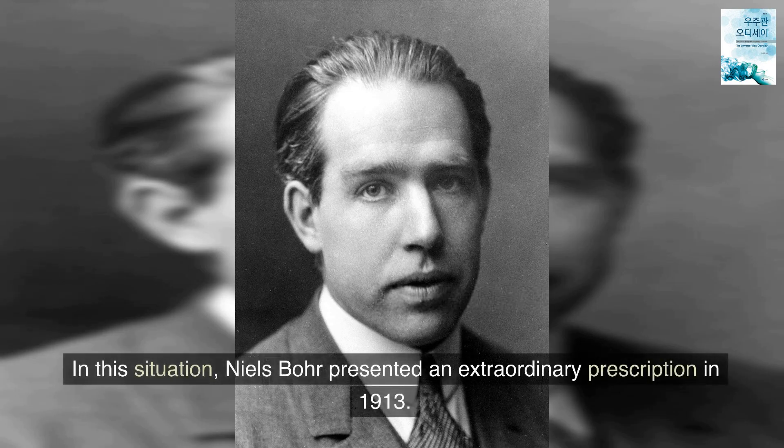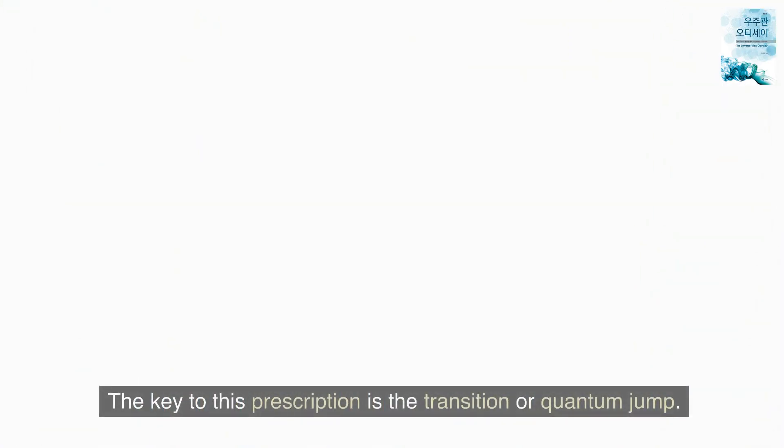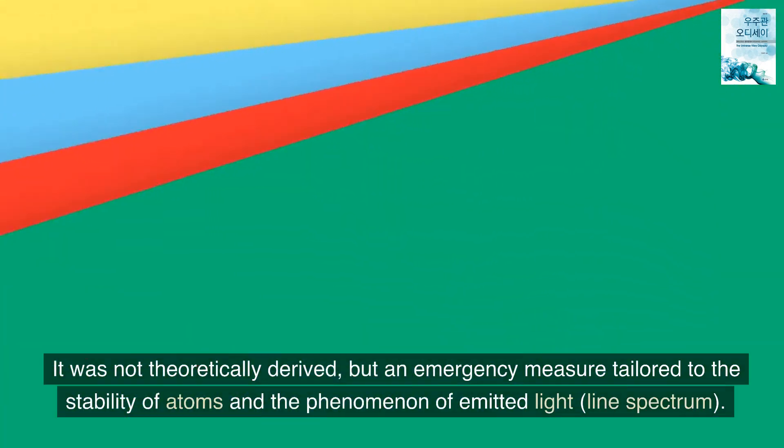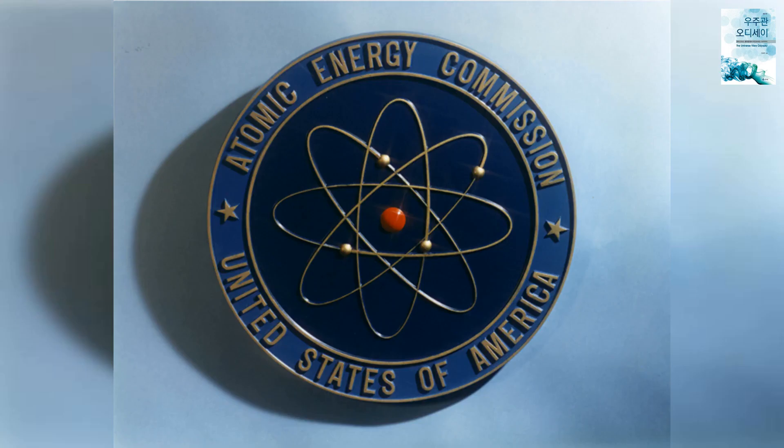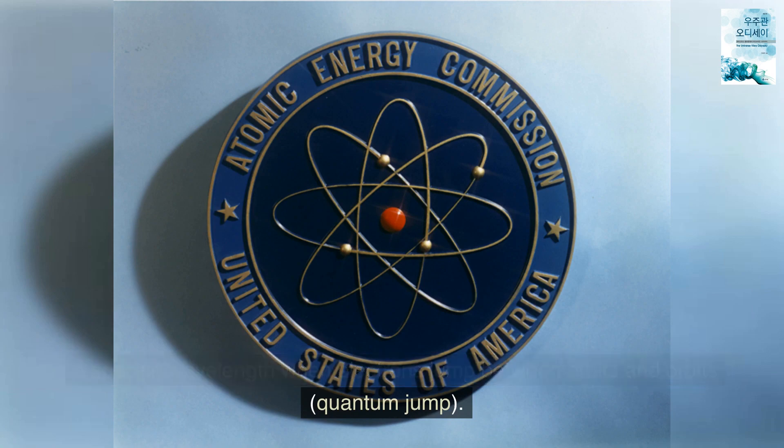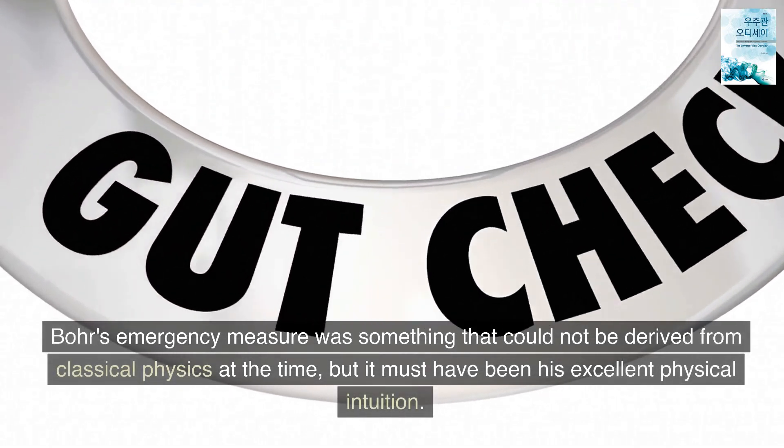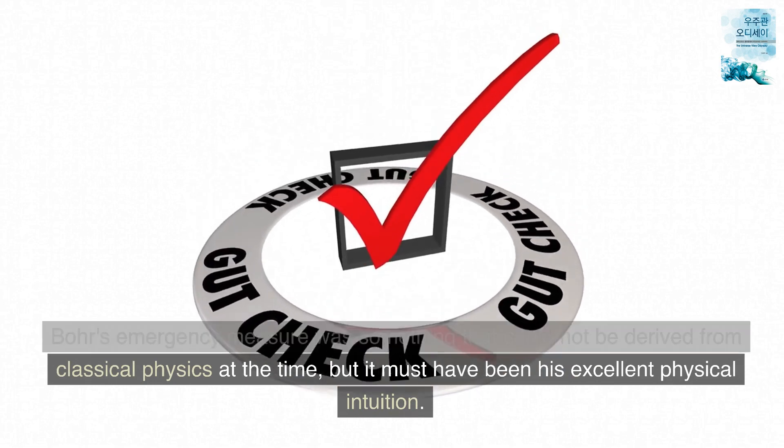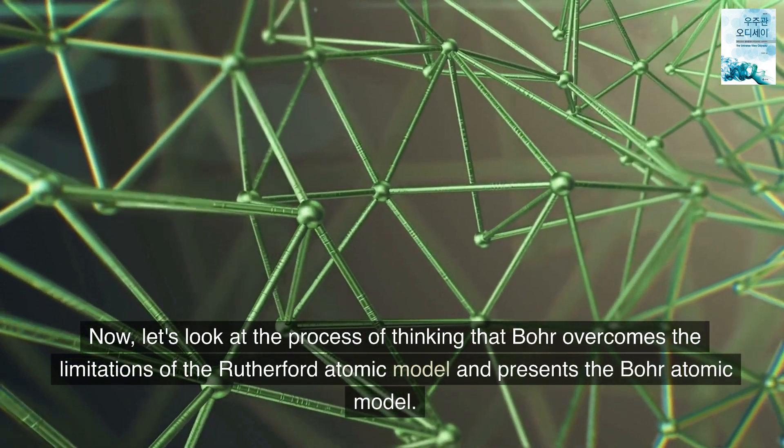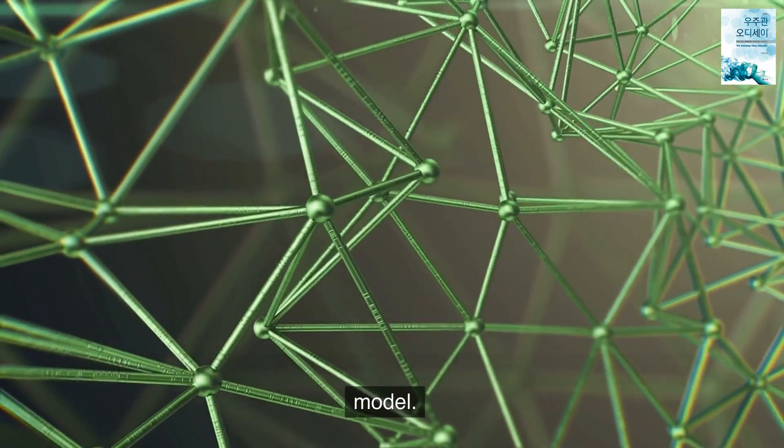In this situation, Niels Bohr presented an extraordinary prescription in 1913. The key to this prescription is the transition or quantum jump. It was not theoretically derived, but an emergency measure tailored to the stability of atoms and the phenomenon of emitted light, line spectrum. For example, it is assumed that electrons do not emit light when orbiting a specific orbit even when they revolve around the nucleus, but emit light of a specific wavelength when electrons jump between orbits, quantum jump. Bohr's emergency measure was something that could not be derived from classical physics at the time, but it must have been his excellent physical intuition. Now, let's look at the process of thinking that Bohr overcomes the limitations of the Rutherford atomic model and presents the Bohr atomic model.